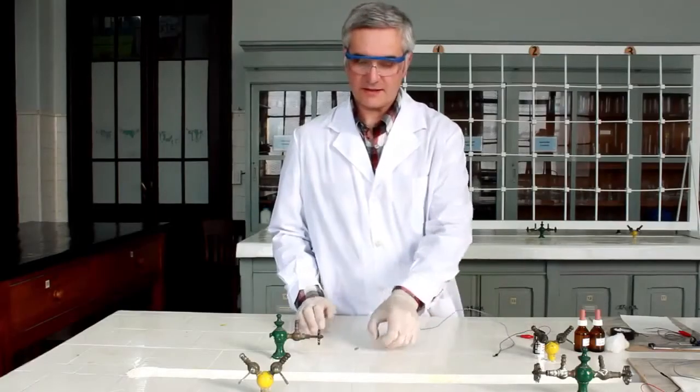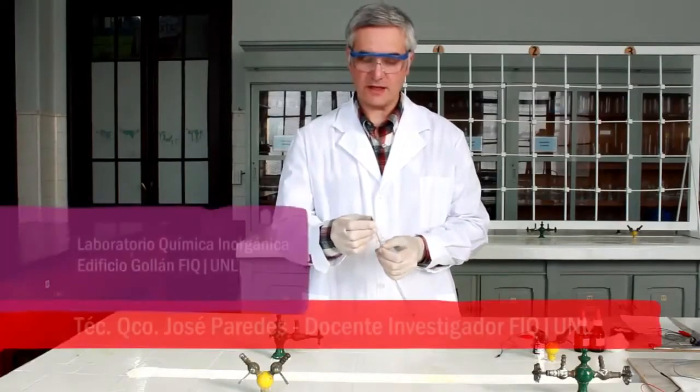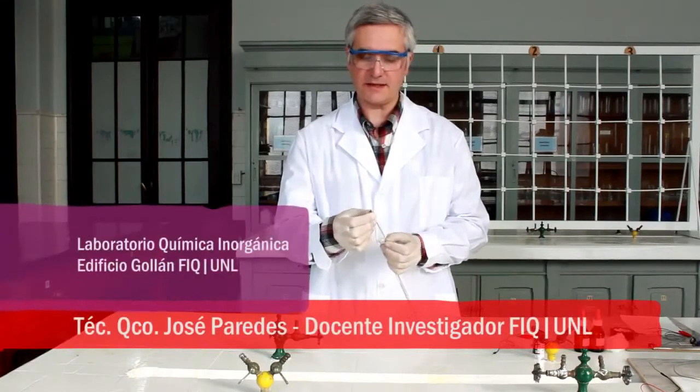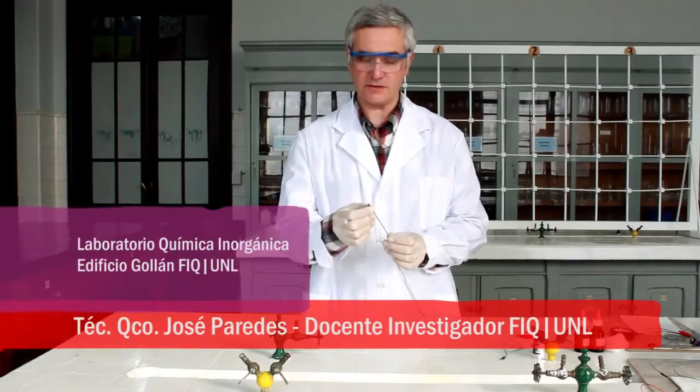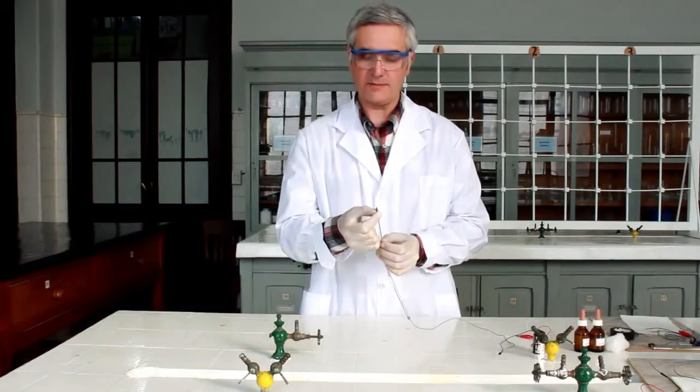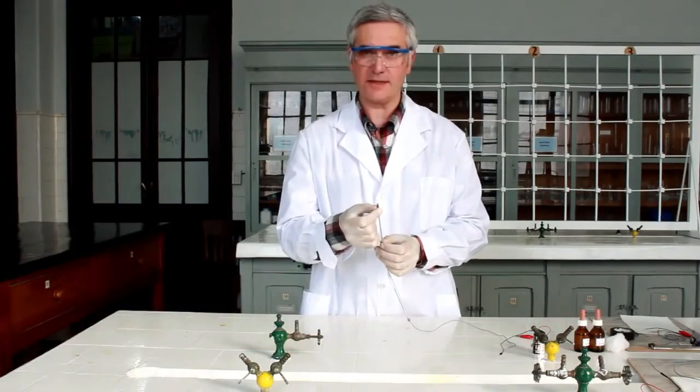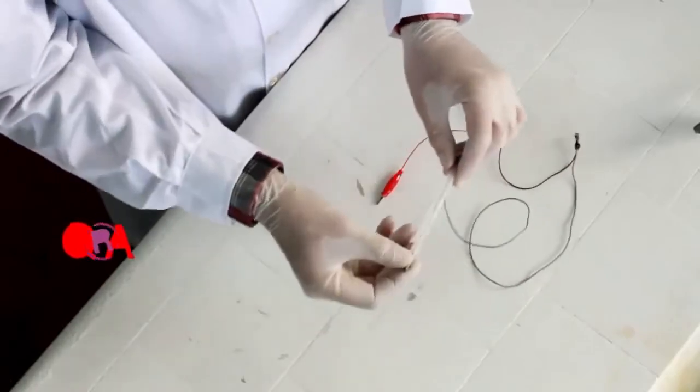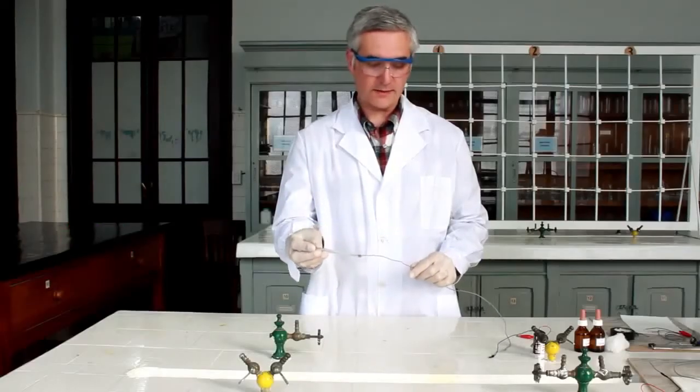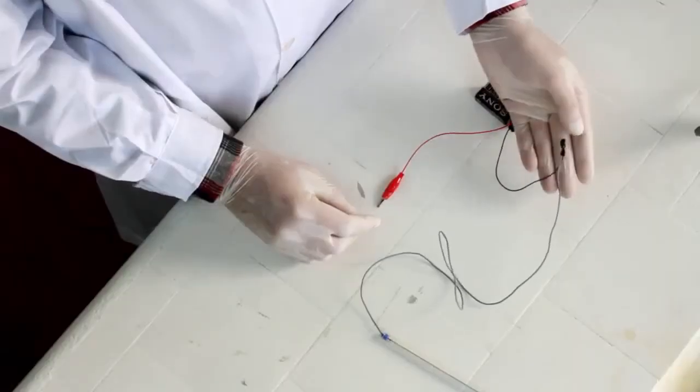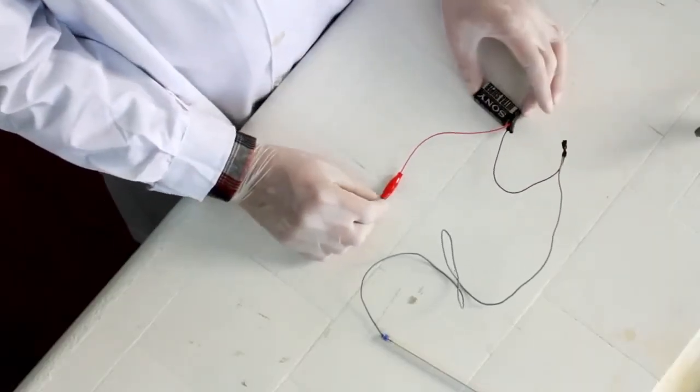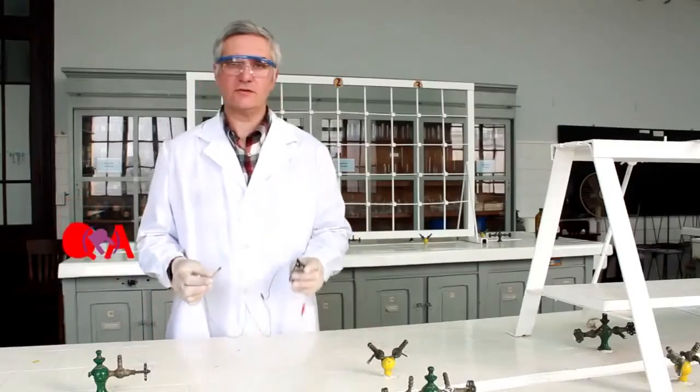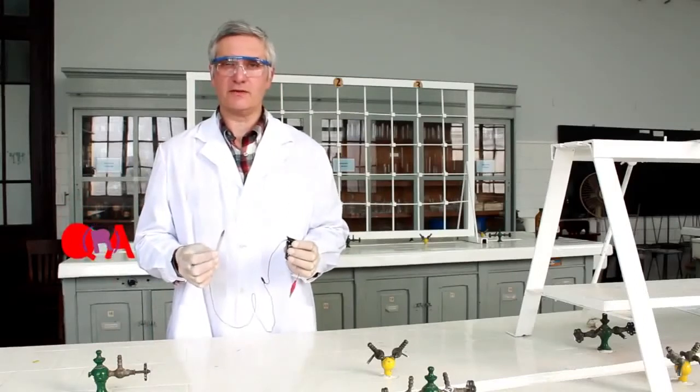El alambre de estaño se introduce dentro de la lapicera de manera que aparezca unos pocos milímetros por la punta donde previamente se ha extraído la bolita metálica. Este se conecta en forma adecuada con un cable de cobre hasta el borne negativo de la pila. De esta manera está listo el segundo electrodo, el cátodo.